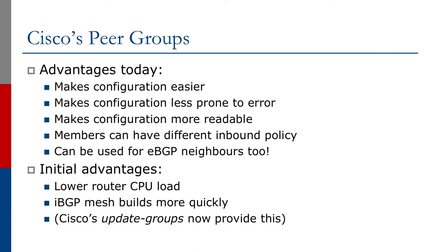More recently, internal coding improvements in IOS introduced something called an update group, which automatically works out which peers have the same outbound policy and groups them all together. So even though Peer Groups may seem to have been replaced by Cisco's update groups, many operators still find Peer Groups extremely useful for ease of operation of the network.